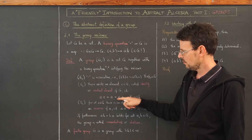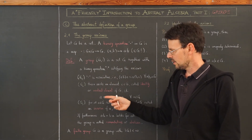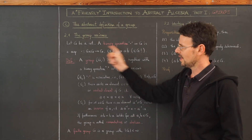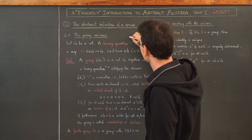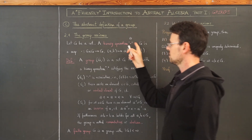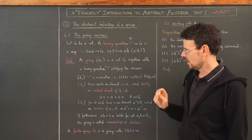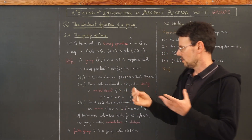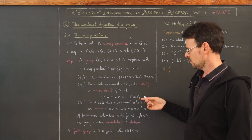If we compose a·e, it simply changes nothing — it gives a, and the same for e·a. The dot notation does not mean we have multiplication of any kind; this is just an abstract symbol for this binary operation. I could have chosen a star or another symbol, but I decided to use the dot.